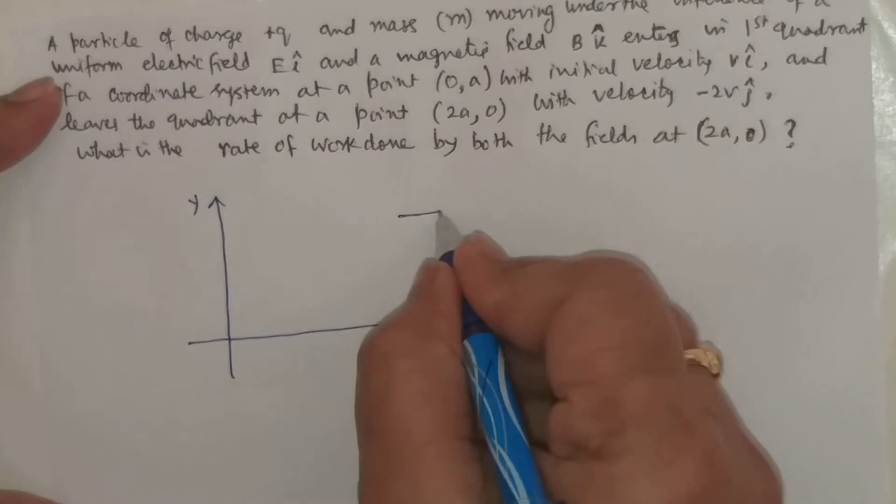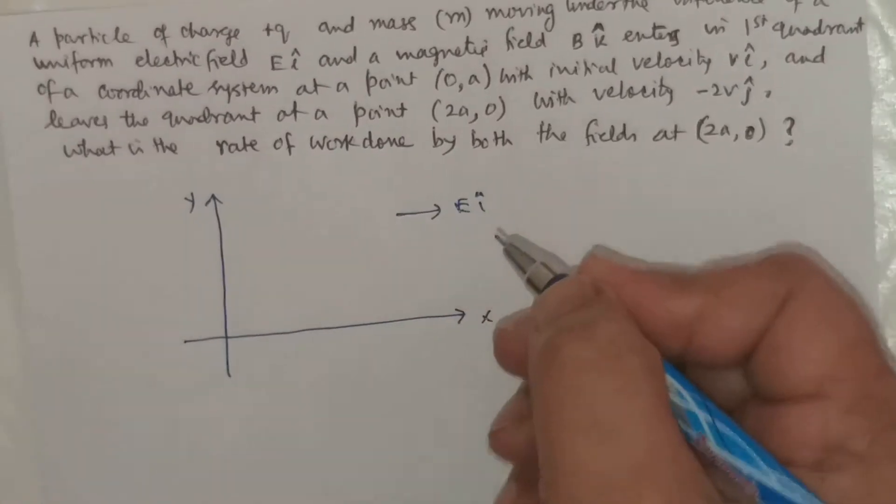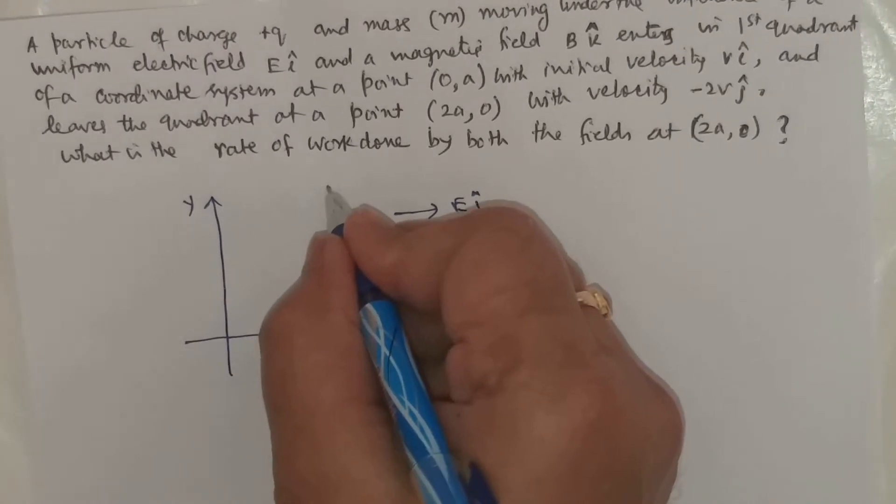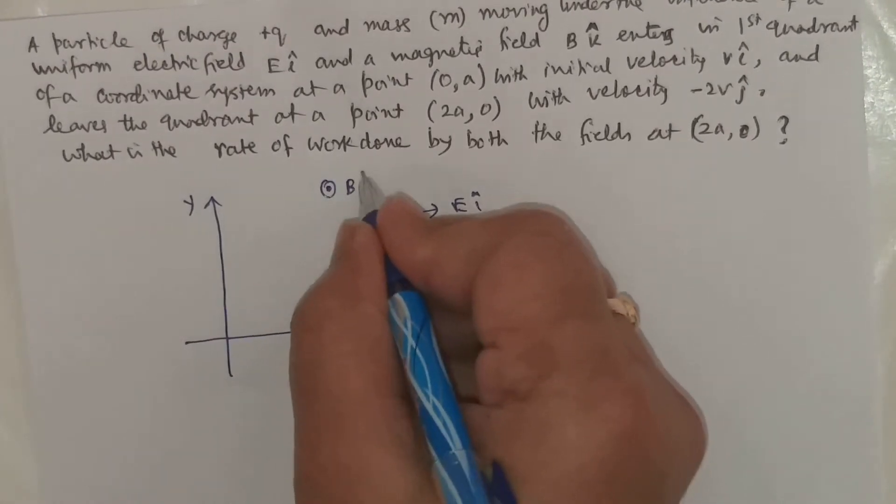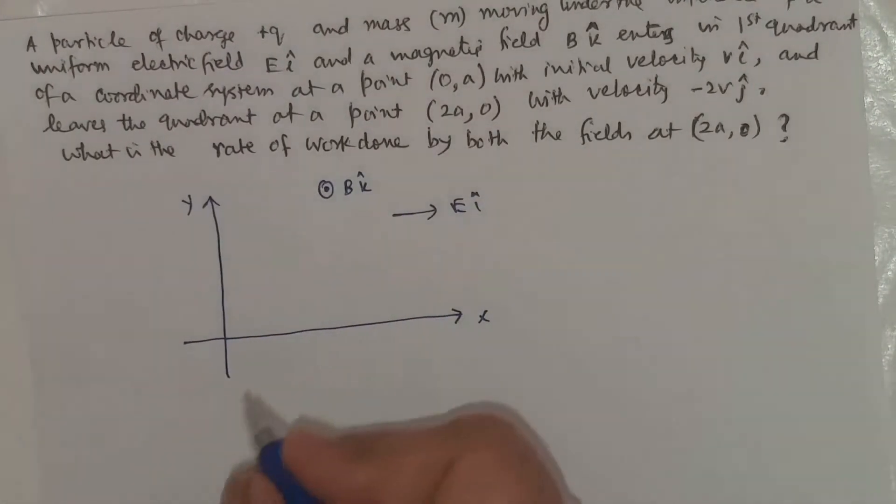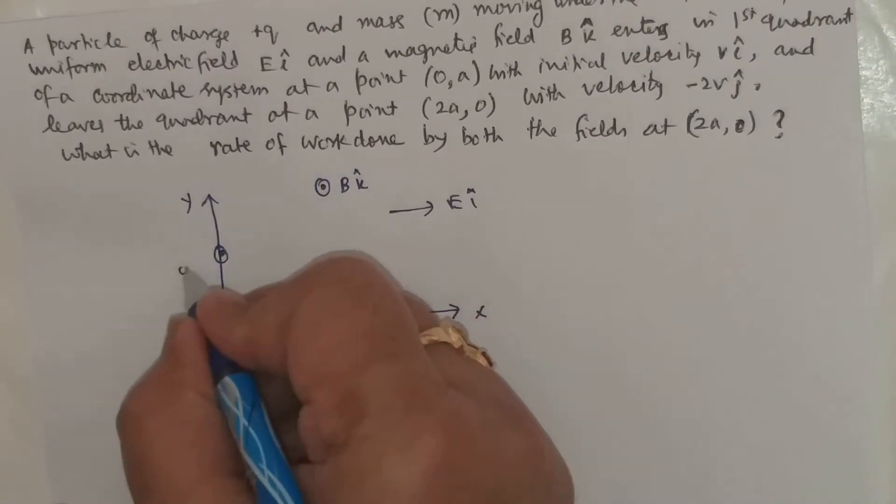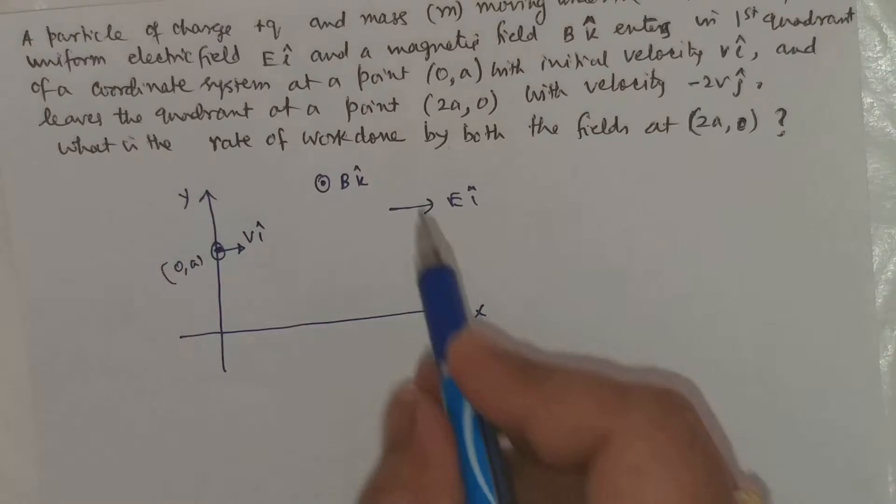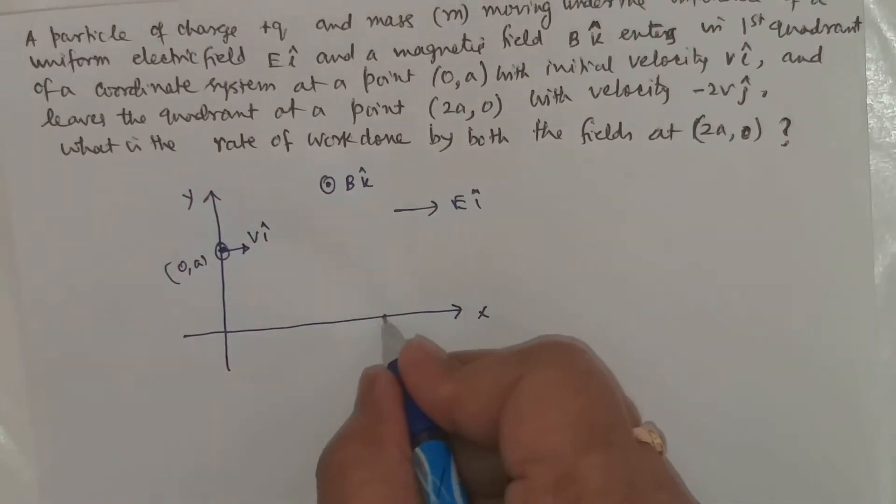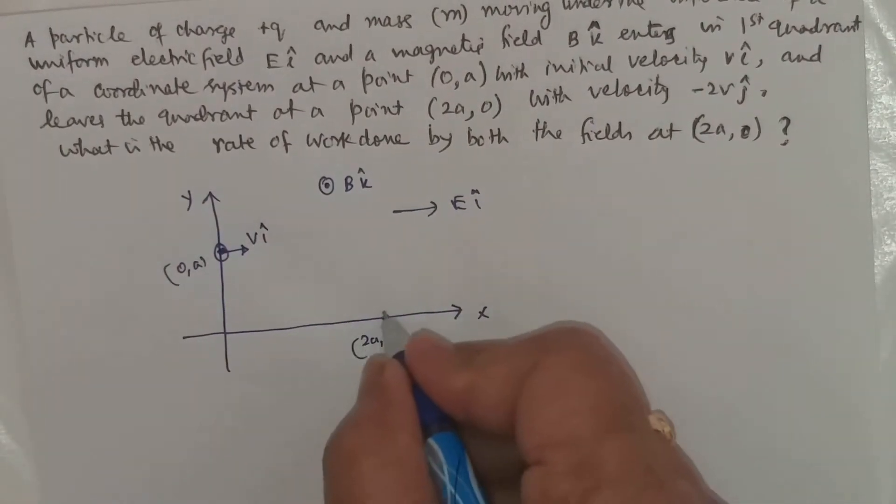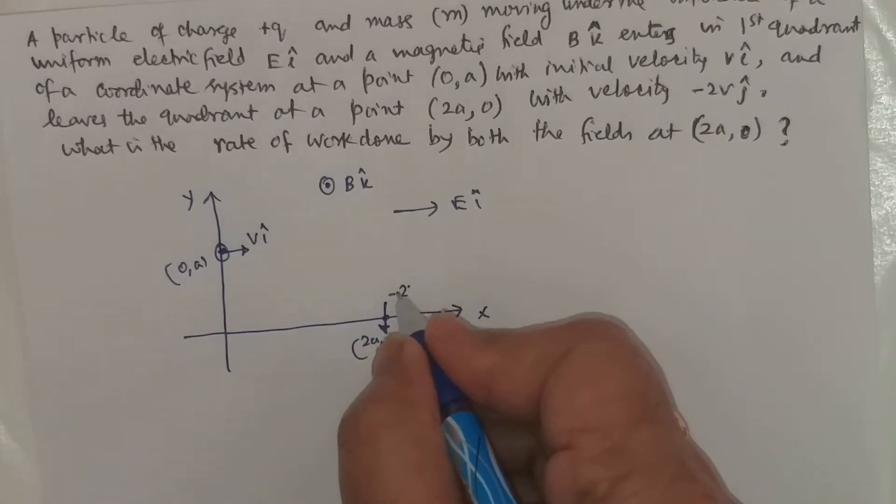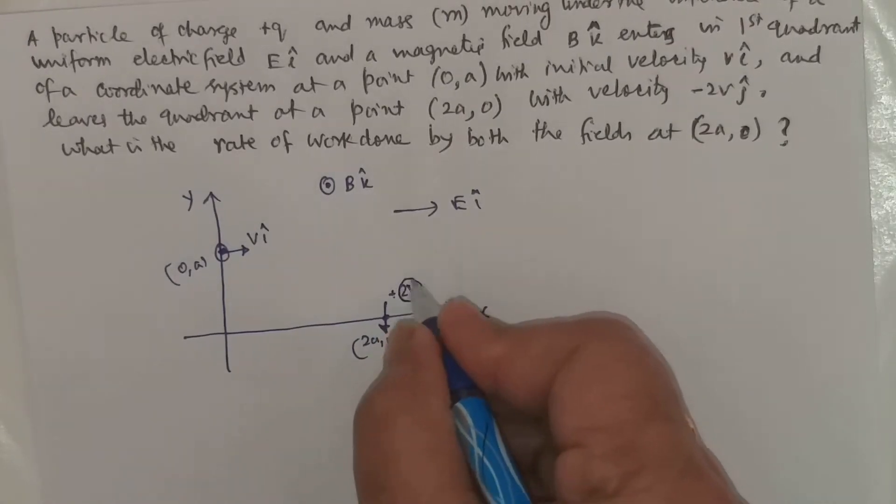This is the y-axis and the electrostatic field is acting along the x-axis and the magnetic field is K means it is dot. This is magnetic field BK and a charge particle enters at (0,A) with a velocity VI and it leaves at a point (2A,0) with a velocity -2VJ, that is the velocity, the speed is 2V here.